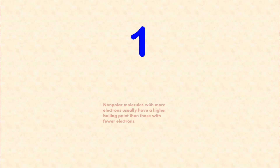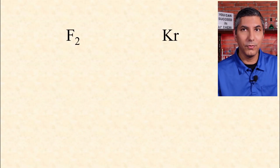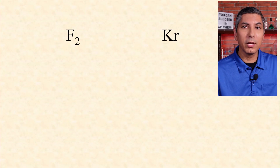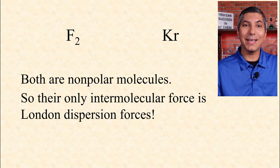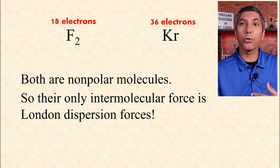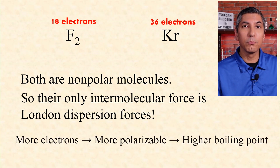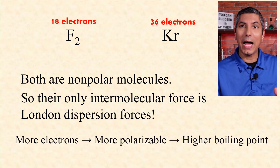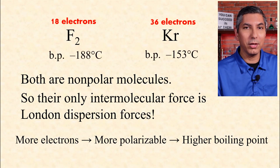Number 1. Non-polar molecules with more electrons usually have a higher boiling point than those with fewer electrons. If you compare two non-polar substances, such as fluorine gas F2 and krypton gas, their only intermolecular force will be London dispersion forces. To determine which has the higher boiling point, we need to count electrons. Fluorine has 18 electrons while krypton has 36. Whenever a non-polar structure has more electrons, it's more polarizable, giving it a higher boiling point. Indeed, krypton has a higher boiling point than fluorine.